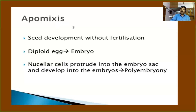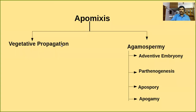In apomixis, reproductive propagules can be produced without syngamy and meiosis. They can produce seeds, so it mimics sexual reproduction, but is actually a type of asexual reproduction. Apomixis can be broadly classified into two categories: vegetative propagation and agamospermy.